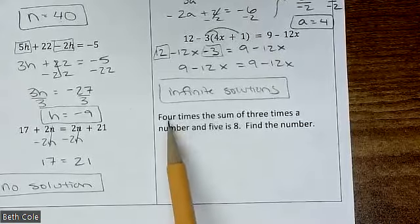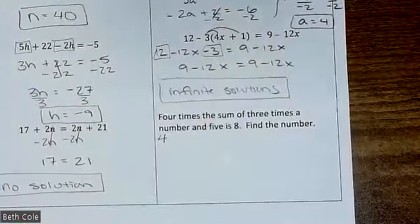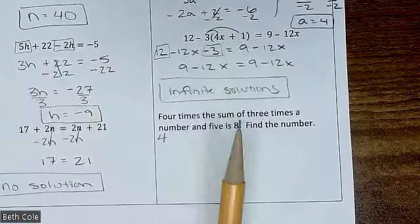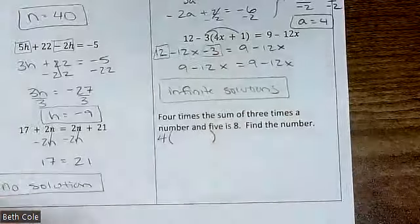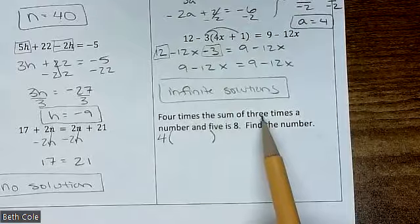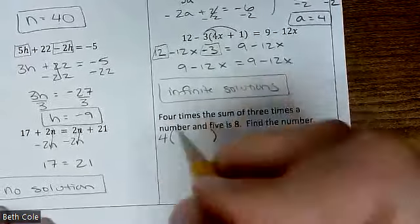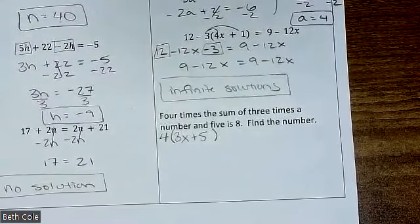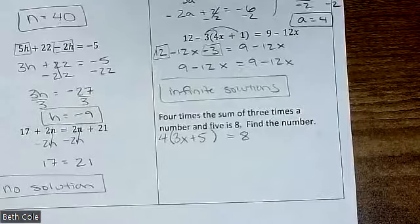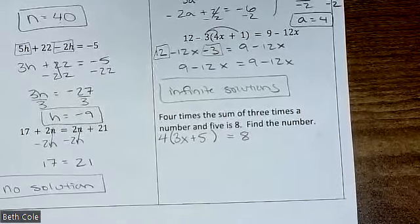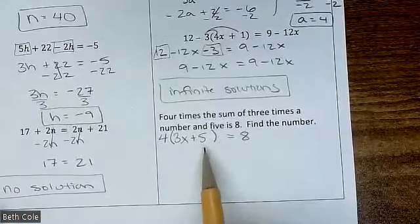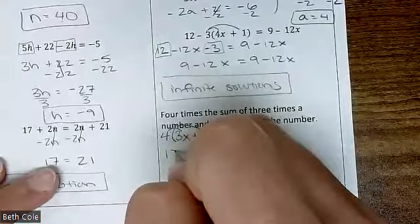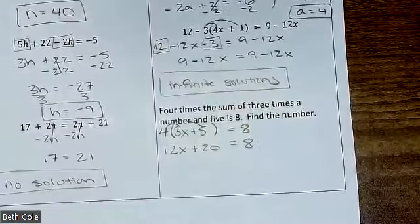And then this one you're going to have to set it up yourself. Four times — the sum — what does 'sum' mean? Addition. And it means you're also going to need parentheses. Sum of — now what's going to go in the parentheses? Three times a number and five, so that would be 3x plus 5. And then what — read the rest of it. Equals 8. If you lose your mind on the test, make up an equation and solve it, because even if this part's wrong, if your steps are correct I can give you credit. We're going to distribute the 4 — that'll give you 12x plus 20 equals 8.